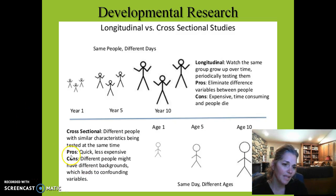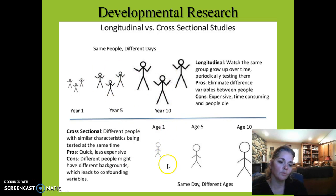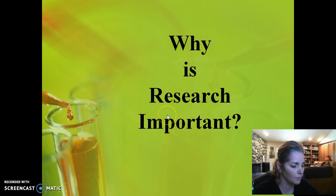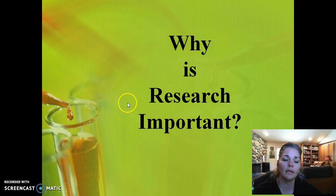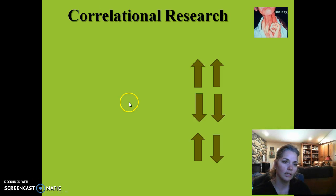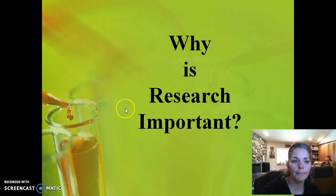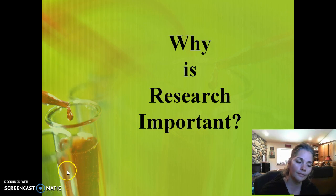Here's a nice visual: longitudinally, you're following the same three people in year 1, year 5, and year 10 — measuring those same people as they get older. In cross-sectional, you have one 1-year-old, one 5-year-old, and one 10-year-old, collecting all the data at the same time from different age groups. I'm going to stop here and come back to the next section, because I want to get the correlational discussion all into one video rather than breaking it up. I'll look forward to seeing you after a quick break.